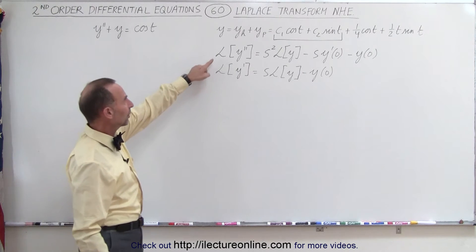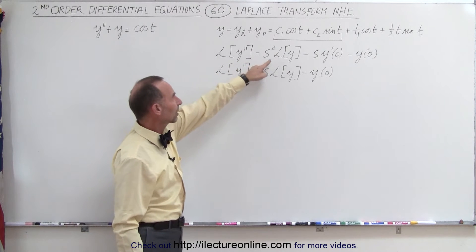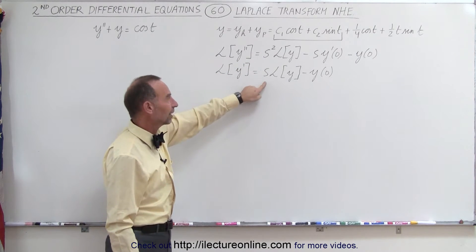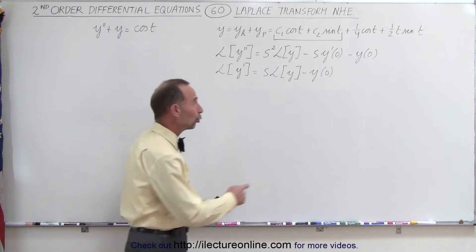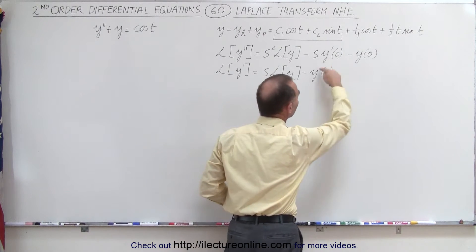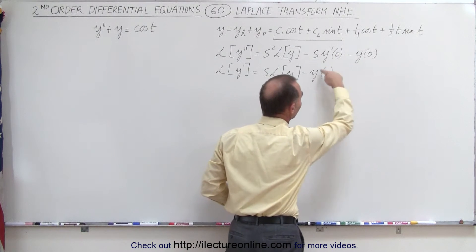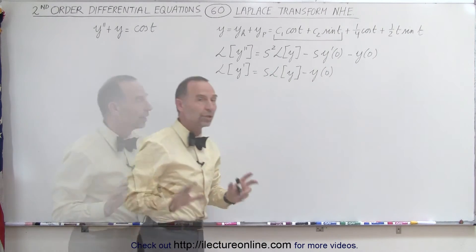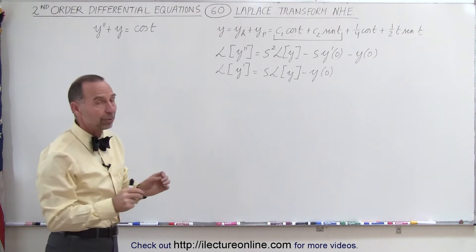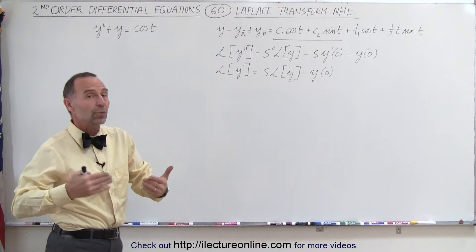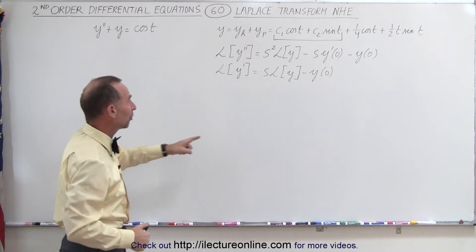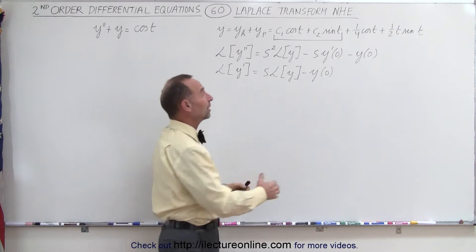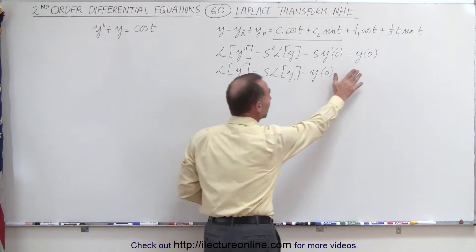Taking the Laplace transform of y double prime looks like this, and the Laplace transform of y prime looks like this. Remember that normally we're given the initial conditions — initial values for y and y prime when time equals zero. We don't have that in this example, but we can still use the Laplace transform by simply assuming these are going to be constants.